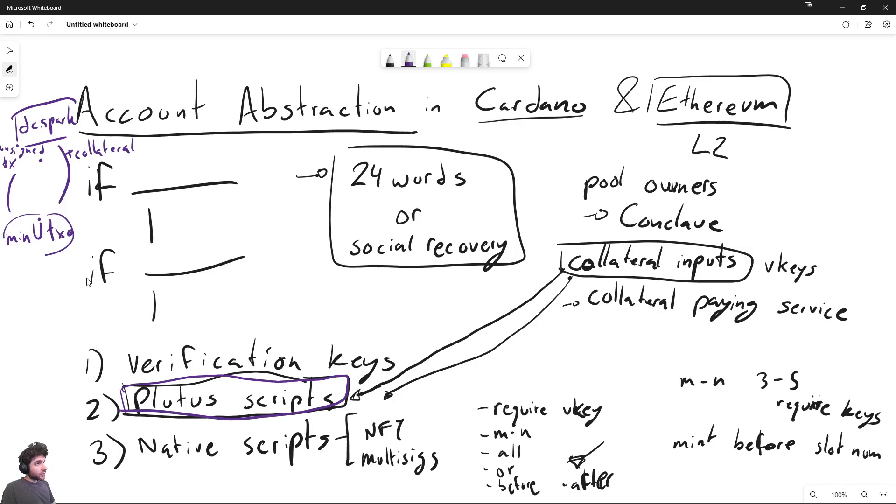And another place where native scripts and smart contracts are different is native scripts themselves. Notice that we have a require VKey, but we do not have a require scripts. So ideally, we would extend native scripts to support a require scripts call to basically unify VKey and require scripts together. So there's always at least one way to handle it.